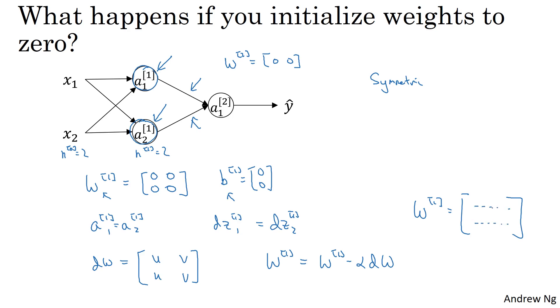So it's possible to construct a proof by induction that if you initialize all the weights, all the values of w to 0, then because both hidden units start off computing the same function, and both hidden units have the same influence on the output unit, then after one iteration, that same statement is still true, the two hidden units are still symmetric, and therefore by induction after two iterations, three iterations, and so on, no matter how long you train the neural network, both hidden units are still computing exactly the same function. And so in this case, there's really no point to having more than one hidden unit because they're all computing the same thing.